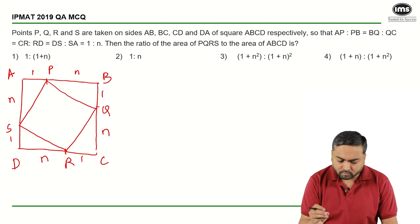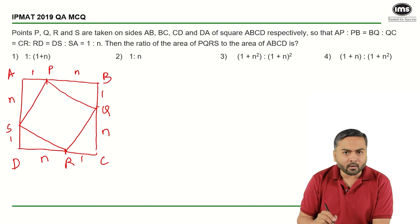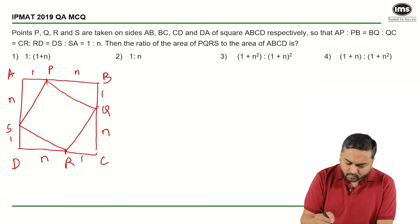Now, another approach is you manually solve this. If this is n and if this is 1, 90 degrees, so PQ will be nothing but square root of n² plus 1.